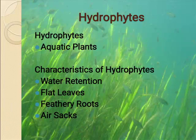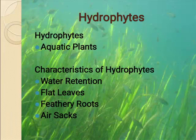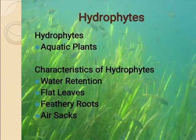The third character is feathery roots. Hydrophytes are supported by water as compared to roots and stem structure. Most hydrophytes have roots that are small and feathery, designed to take in oxygen from the water. Since the plant is fully submerged in water at all times, there is less need for a long and thick root structure.